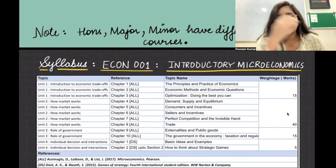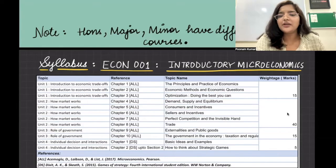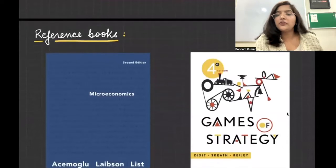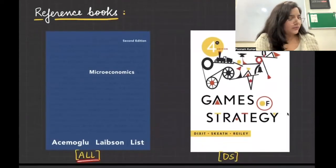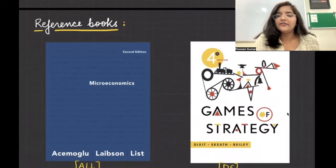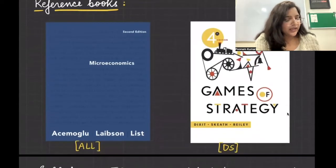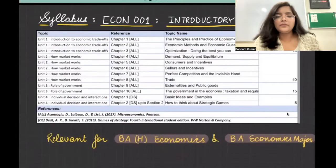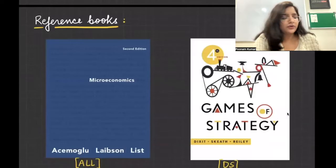There is no need to buy any past year papers for reference, because your course is starting completely fresh. The reference books for this course are going to be: first, the book by Acemoglu, Laibson, and List — abbreviated as ALL — which is their Microeconomics textbook. The second reference book is Games of Strategy by Dixit and Skeath, abbreviated as DS in the syllabus. These two are going to be your reference books for Introductory Microeconomics.